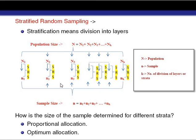From each of the parts we will collect our sample, and the sum of the samples from all the different parts should equal the total sample size for our study. So if the population is of size N, we divide it into N1, N2, N3, ..., NK, where K is the number of divisions or layers.